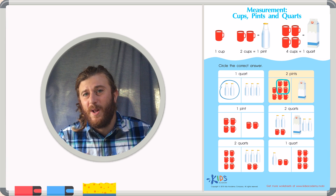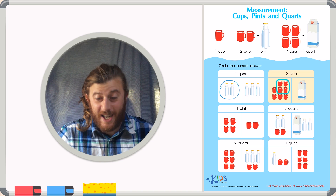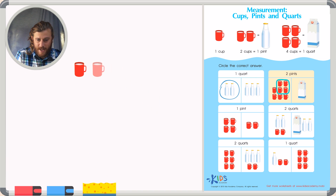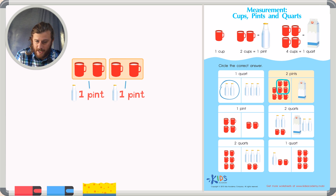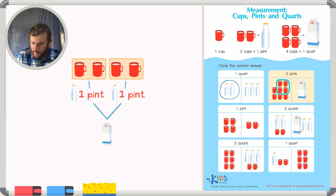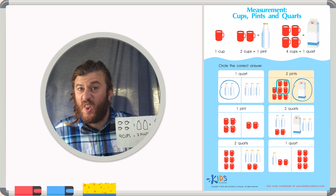But I know, from what I've learned, that two pints equals one quart. Because two pints is represented by four cups, because two cups represents one pint. And the other two cups represent another pint. And one plus one equals two. So again, two pints, or four cups, is equivalent to one quart. Four cups, two pints, one quart — all the same.